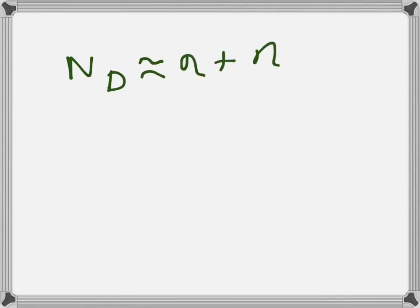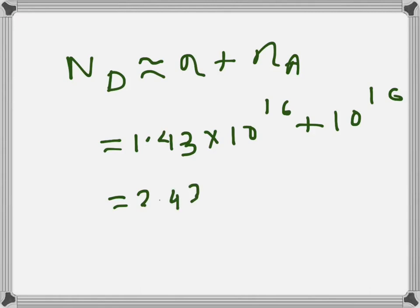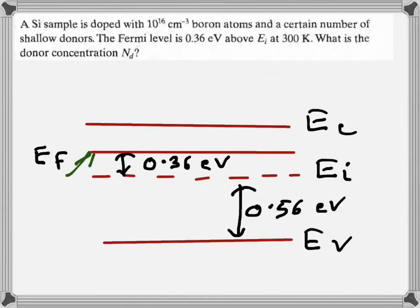In order to have this net effect, we need to have total concentration of approximately n plus n acceptor. So that is 1.43 into 10 to the power 16 plus 10 to the power 16, which gives 2.43 into 10 to the power 16 per centimeter cube. That much donor concentration needs to be present in this sample for the Fermi level to be 0.36 electron volt above intrinsic Fermi level.